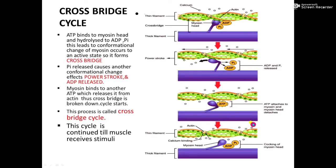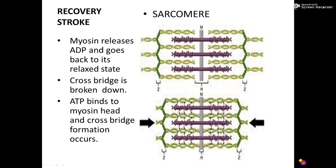This new ATP molecule is again hydrolyzed into ADP and inorganic phosphate, liberating energy. This energy is used again to bind the myosin head to the active sites on the actin filament, and the process repeats. This is known as the cross bridge cycle. The cross bridge cycle occurs until the sarcolemma receives stimuli from the neuron. Power stroke and recovery stroke are continued, and with each cross bridge cycle, the length of the sarcomere reduces — that is contraction.